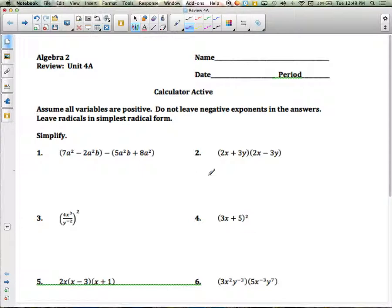Review Unit 4a. The first group of questions ask us to simplify. If you look at the first set, you have 7a squared minus 2a squared b, and that whole thing is going to be subtracted, and you're going to subtract 5a squared b plus 8a squared.